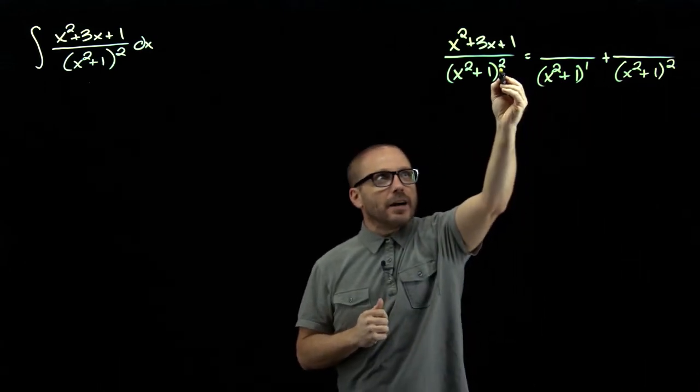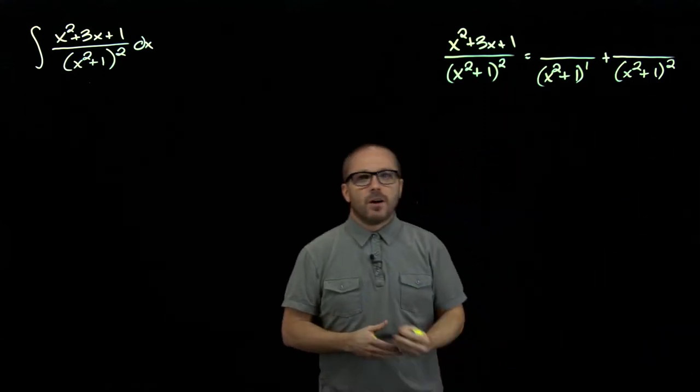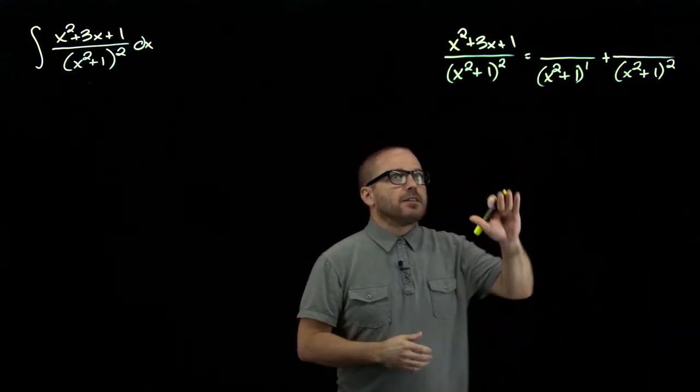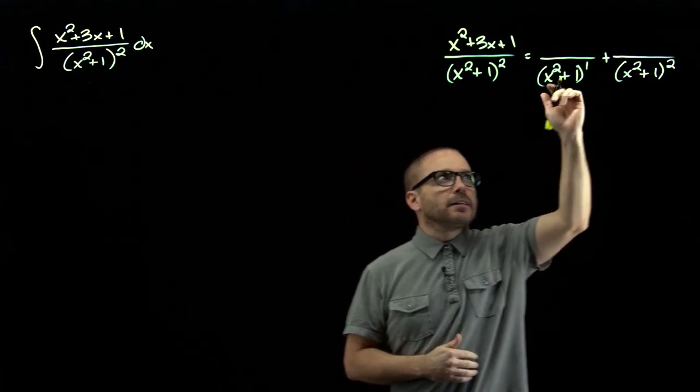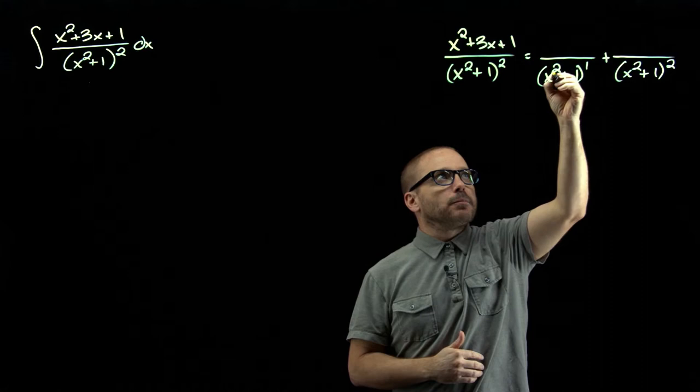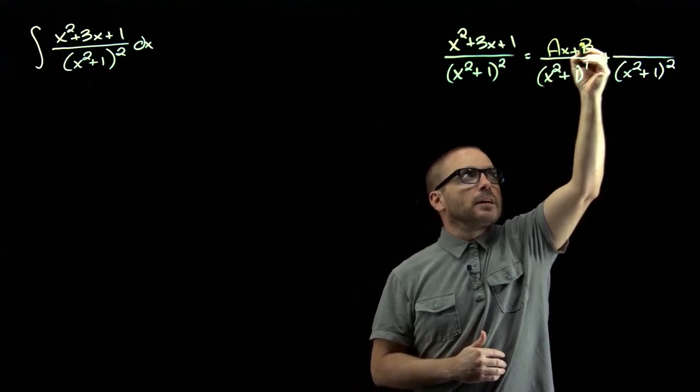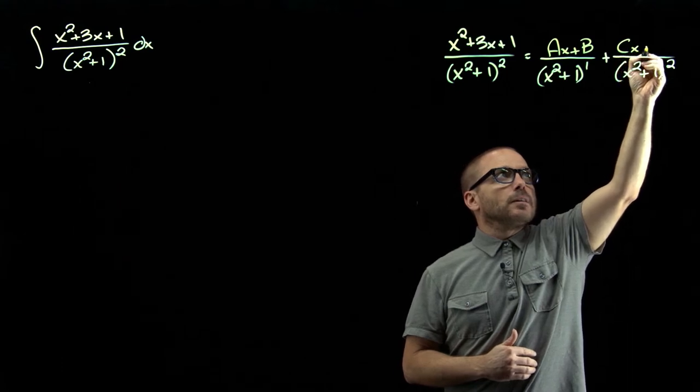And if this was higher, if this was repeated four times, you'd have to just keep going all the way up to that degree. And because the factor is quadratic, it's the type of factor that determines what's on top. So it's a second degree factor, it gets a first degree expression on top.